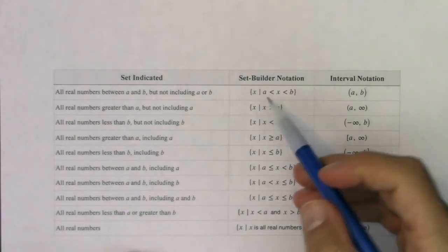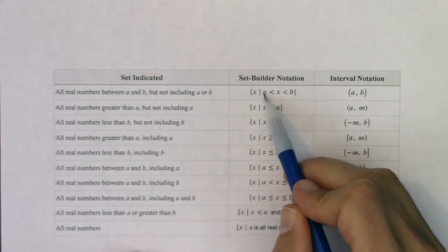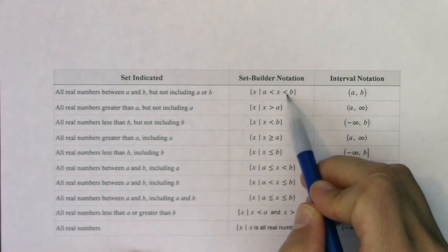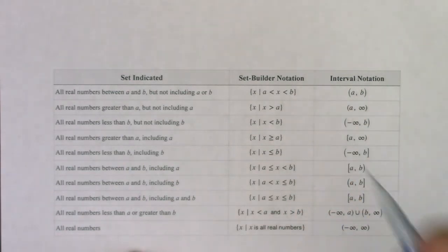If you have dealt with set notation before, great. It's just saying that this is the set of all numbers, all x's, such that—that's what this vertical bar means—such that a is less than x is less than b. I think it's just easier to write it from a to b using parentheses.